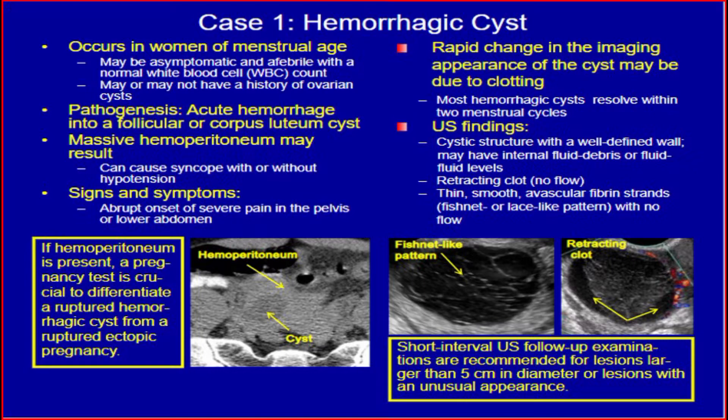Hemorrhagic cysts occur in women of menstrual age. They may be asymptomatic and afebrile with a normal white blood cell count, and the patient may or may not have a history of ovarian cysts. Pathogenesis: acute hemorrhage into a follicular or corpus luteum cyst. Massive hemoperitoneum may result, and it can cause syncope with or without hypotension. Signs and symptoms include abrupt onset of severe pain in the pelvis or lower abdomen. Rapid change in imaging appearance of the cyst may be due to clotting.